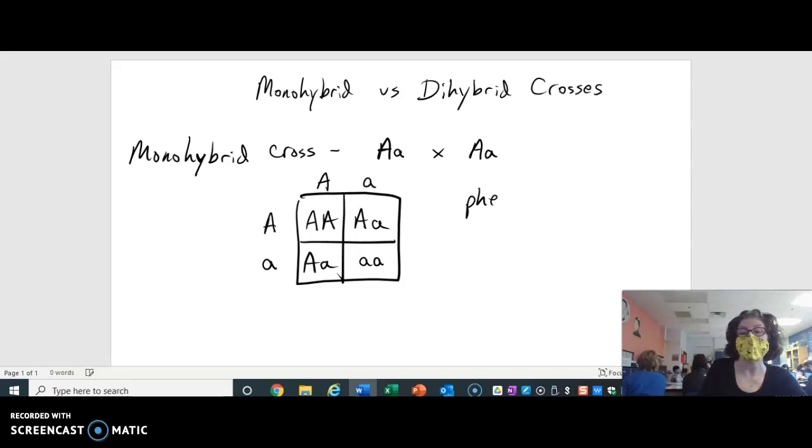And then when you fill in the boxes, you get this genotypic outcome. And then if you were doing the phenotypic outcome, it would be three dominants to one recessive individual, because three dominants are showing and one recessive is showing.